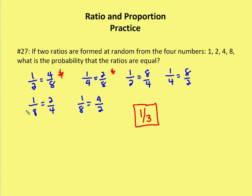And what I found is that two of the six, the ratios are going to be equal. So 1 over 2 is equal to 4 over 8. 1 over 4 is equal to 2 over 8. But the other four, 1 over 2 is not equal to 8 over 4. 1 over 4 is not equal to 8 over 2. 1 over 8 is not equal to 2 over 4. And 1 over 8 is not equal to 4 over 2. So the two ratios that are equal that form proportions are the first two. And that tells me that the probability that the ratios are going to be equal given these four numbers that are chosen at random is going to be 1 out of 3.